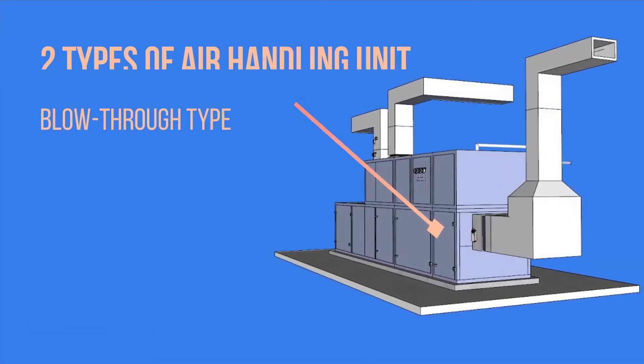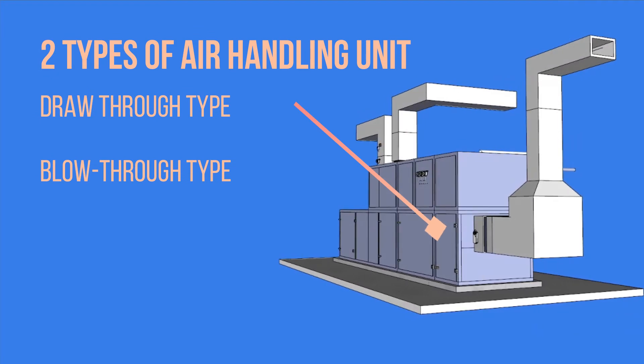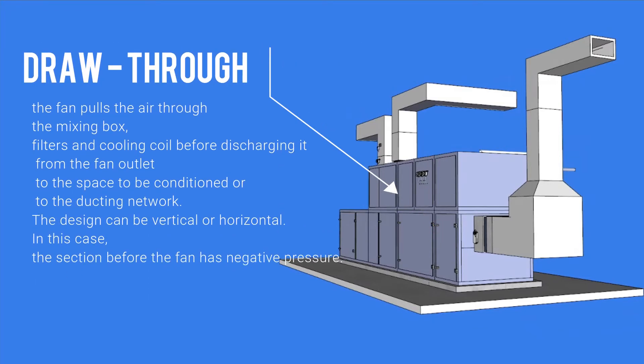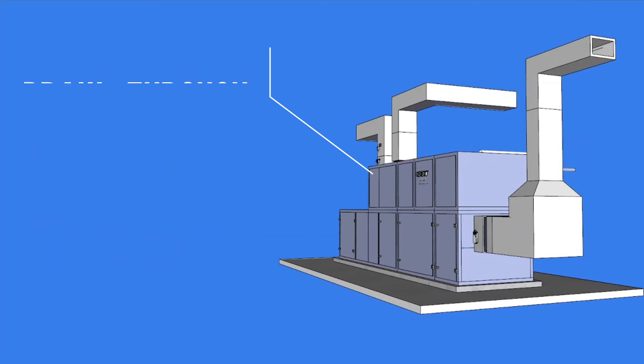There are basically two types of air handling unit that are in use, and they are the draw-through or blow-through. In the draw-through type, the fan pulls the air through the mixing box, filters and cooling coil before discharging it from the fan outlet to the space to be conditioned or to the ducting network. In this case, the section before the fan has negative pressure.